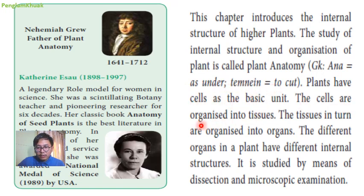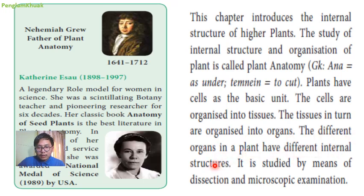Cells are organized into tissue — that means different types of cells combine together to form tissue. The tissue in turn are organized into organs. The different organs in plants have different internal structures. These are studied by means of dissection — that is cutting — and microscopic examination.